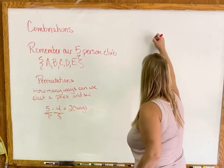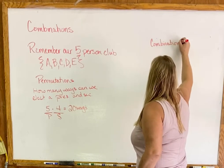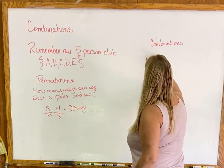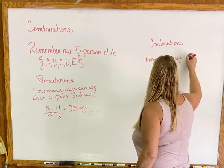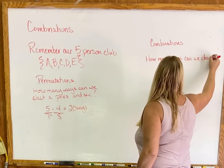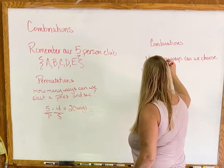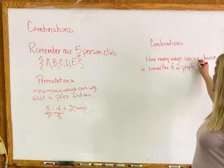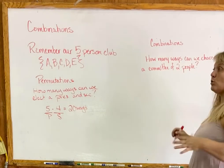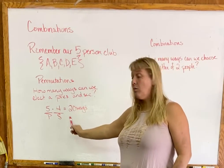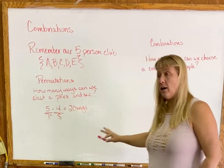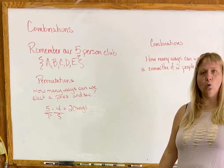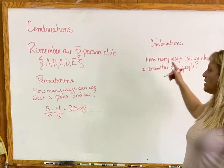Now we're going to look at a combination-type problem. We're still dealing with our five-person club, but the question becomes: how many ways can we choose a committee of two people? The club needs two people to put on a bake sale. Now, president and secretary are different positions — there's an order. But if you're on a committee, does it matter whether you're the first or second person?